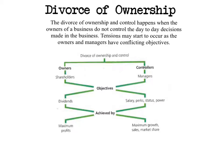Looking at this diagram from one of the textbooks, based on divorce of ownership, we can see that some of these objectives may completely contrast. The manager, known as the controller, controls day-to-day decision making. Some of their objectives include salaries, perks of the job, status, and power. We can definitely see that in some industries — especially banking — if we think about remuneration packages and bonuses, that could be one of their key objectives.